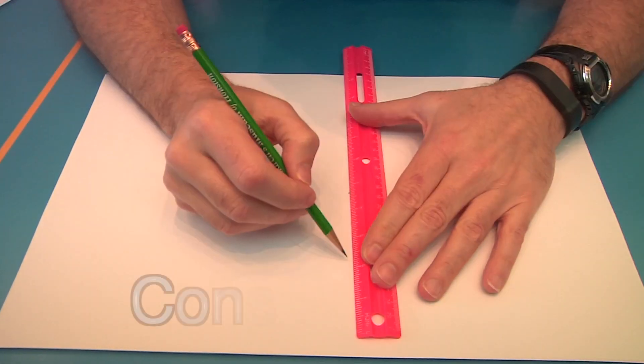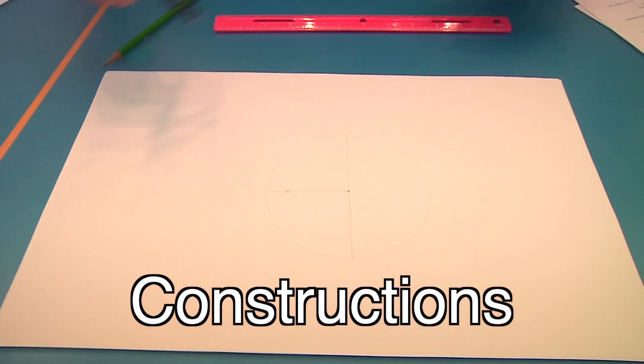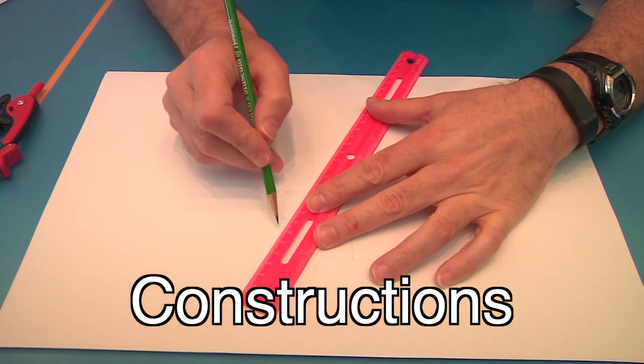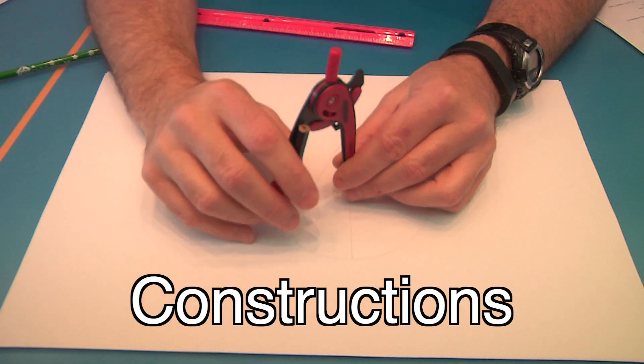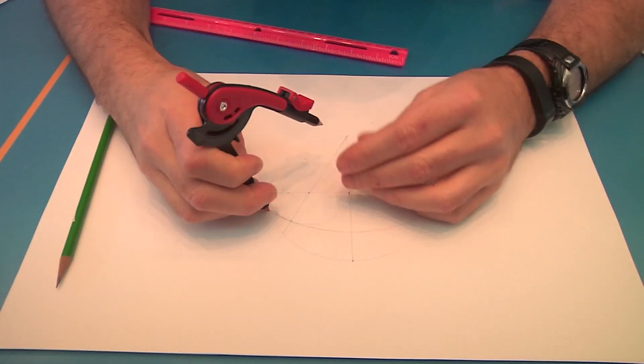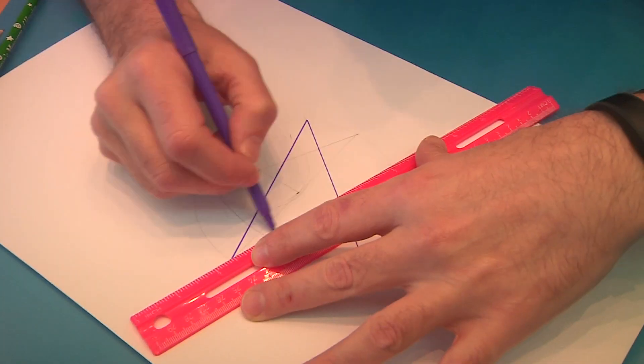In geometry, constructions is the exploration of how to draw lines, angles, and shapes accurately with only a compass and a straight edge, basically a ruler, but without using numbers. In other words, no measuring is allowed. But if you know your rules, you can create all sorts of shapes.